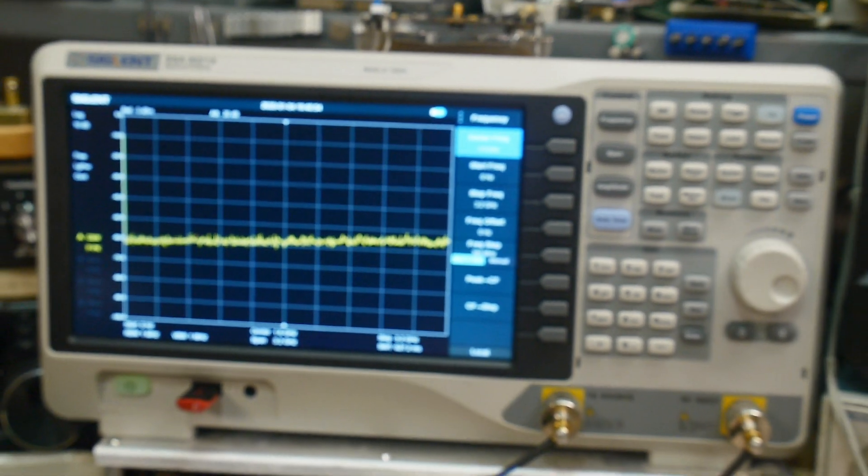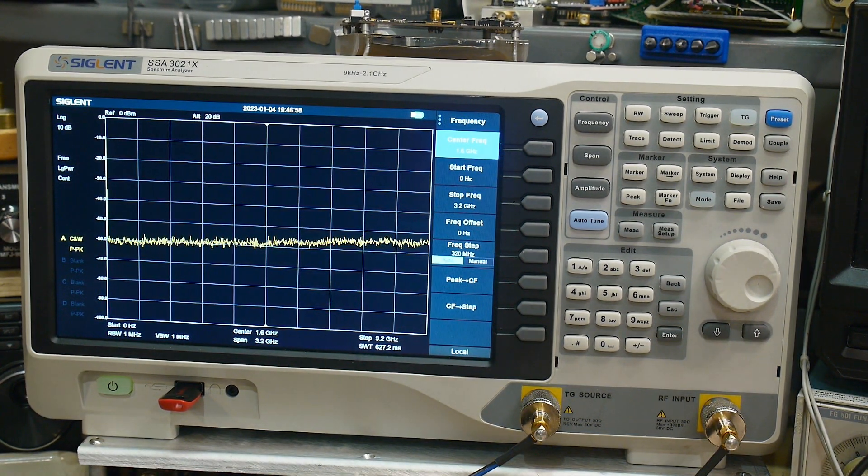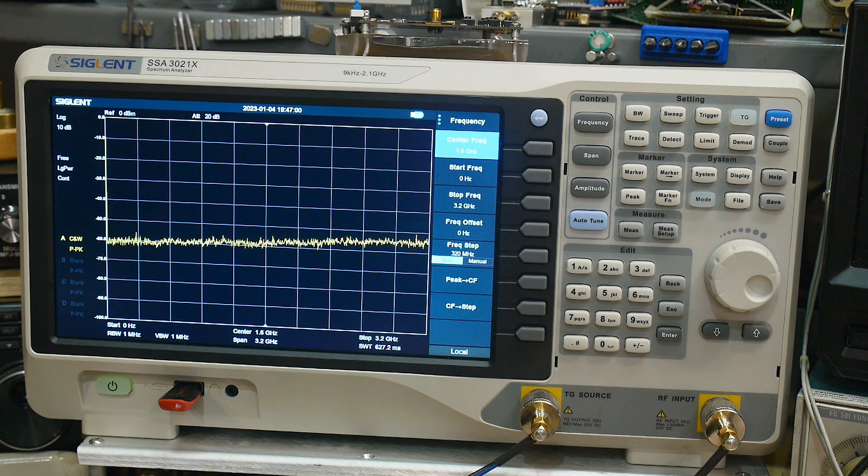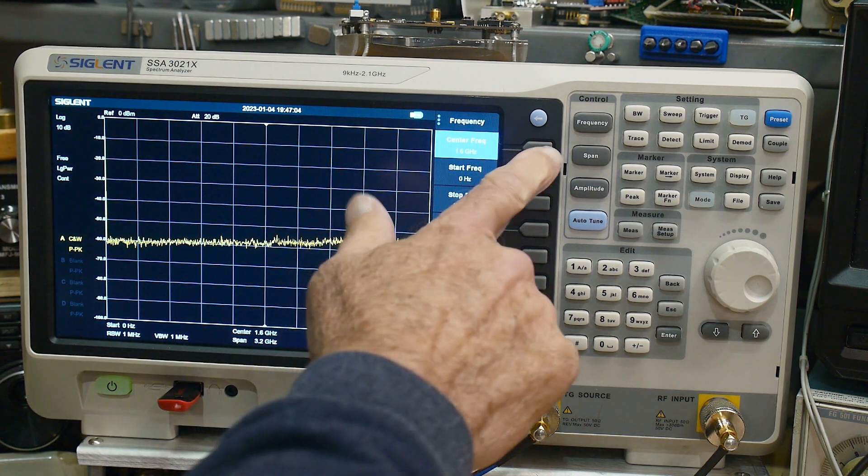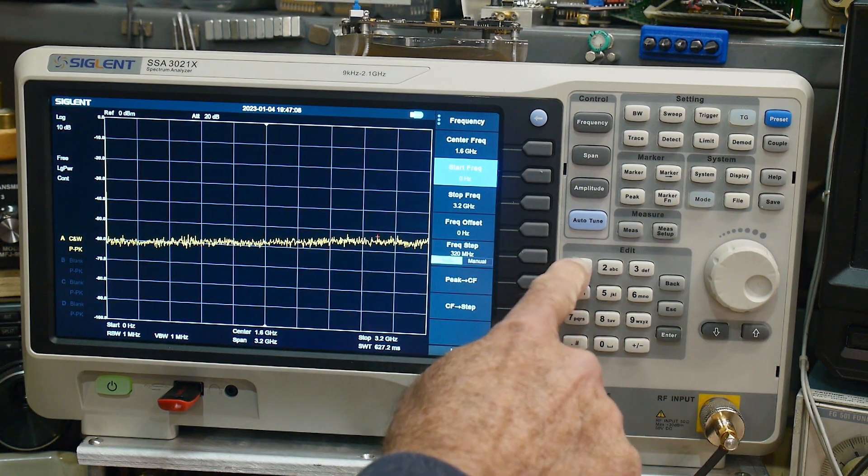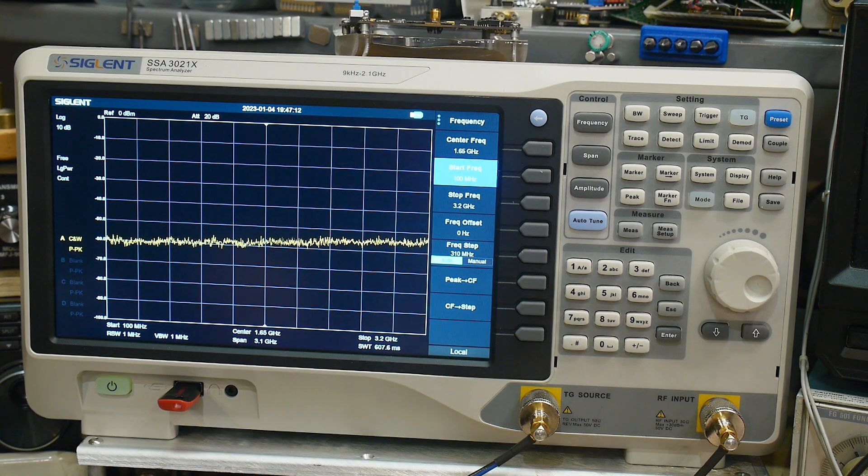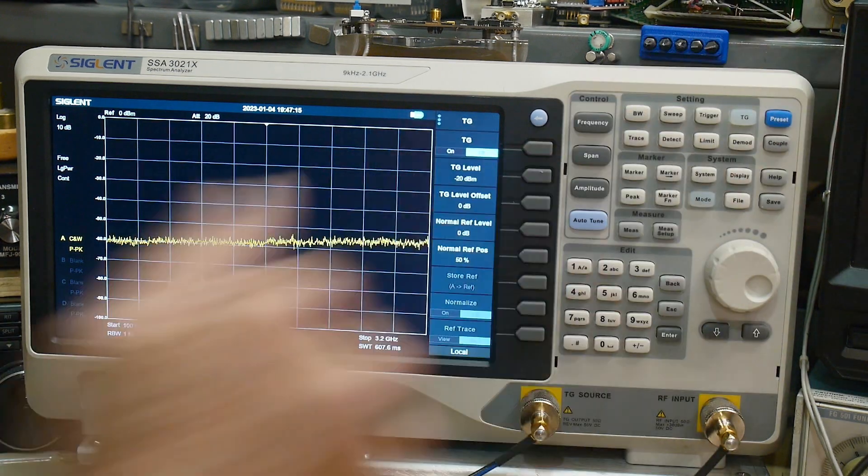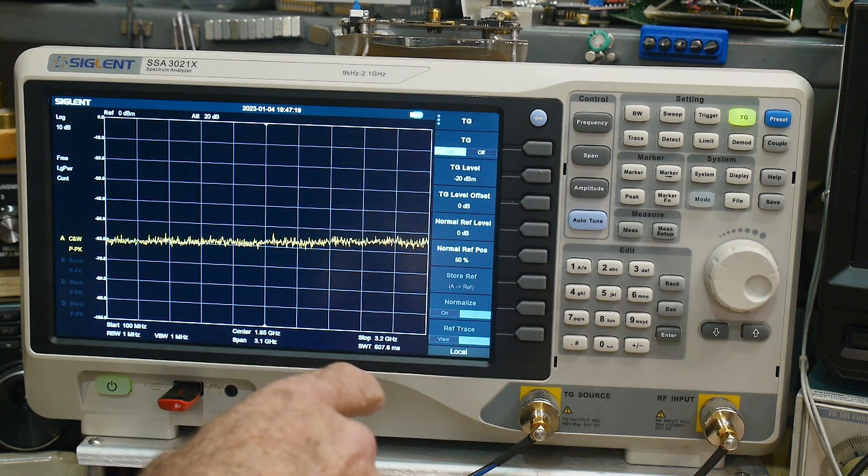Let's get the spectrum analyzer set up. Marked on here, it says this amplifier is good from 500 megahertz to 1.3 gigahertz. Let's do a preset. We'll do a start frequency of 100 megahertz and let it sweep. We're going to be using our tracking generator so we need to turn that on.